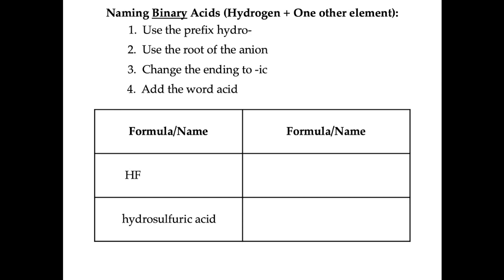So for example, HF, our anion is fluorine. So the root is fluor. So we'd make it hydrofluoric acid. On the other hand, hydrofluoric acid means that it's an acid made of hydrogen and sulfur. So its formula would be H2S.